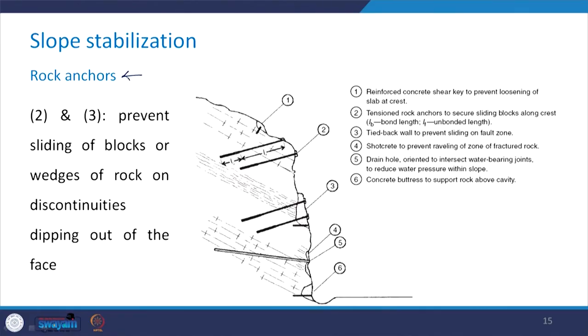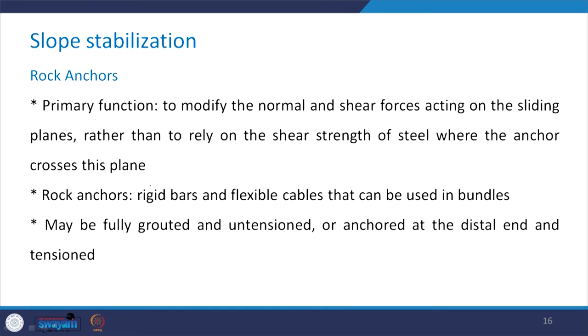Coming to the next type of slope stabilization measure, which is rock anchors. The second and third measures in this figure are the rock anchors. These prevent sliding of blocks or wedges of rock on discontinuities which are dipping out of the slope face. The primary function of rock anchors is to modify the normal and shear forces acting on the sliding planes, rather than to rely on the shear strength of the steel where the anchor crosses this plane.